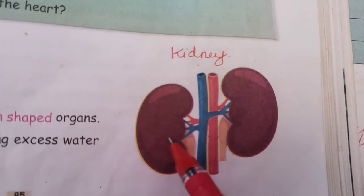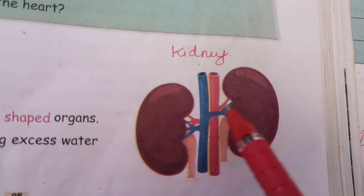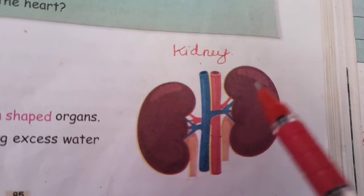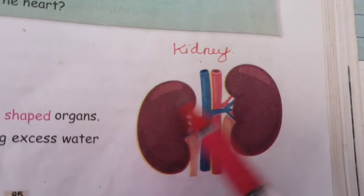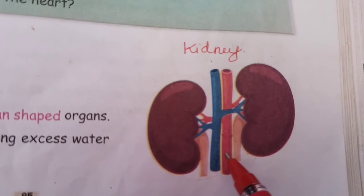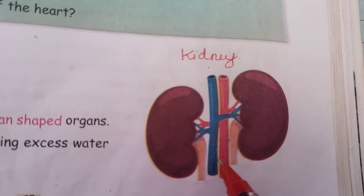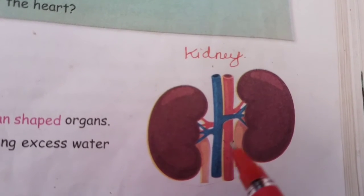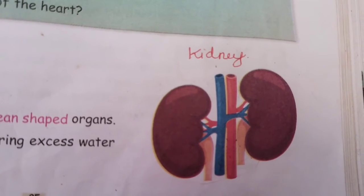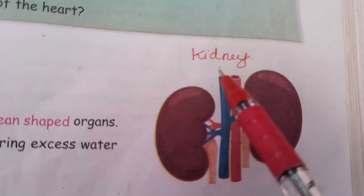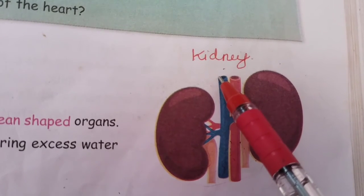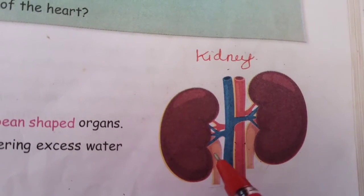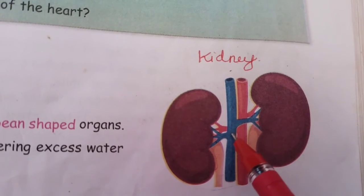What is the function of the kidney in our body? The kidney is used to remove waste in the form of urine from our body. The kidneys remove waste from the blood in the form of urine. The kidney is one of the internal organs found in the abdomen area.